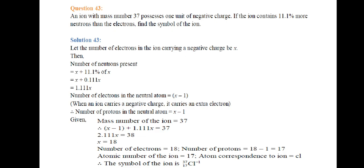Since the ion carries a negative charge, it has an extra electron. So the number of electrons in the neutral atom is x minus 1. Therefore the number of protons in the neutral atom is also x minus 1, because number of electrons equals number of protons in a neutral atom.